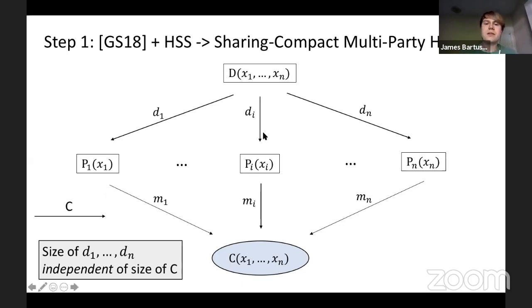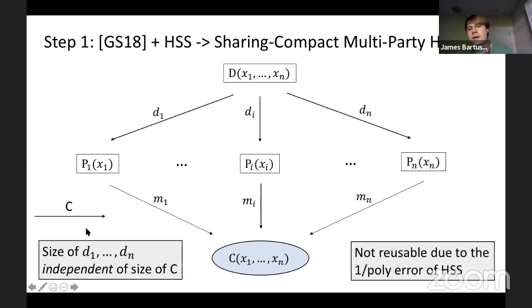The non-trivial property we get is that the size of these DI messages are small. They just consist of PRF keys and HSS shares. In particular, they're independent of the size of the circuit that the parties can compute in the second round. You might think because we're using a PRF to generate an unbounded number of correlations that this first message is reusable and these parties can compute more circuits in the second round. Turns out this is not the case. This primitive only allows the parties to compute a single circuit of some unbounded polynomial size in the second round, but unfortunately it's not already reusable. The reason for that is due to this correctness error of HSS, and you'll have to see the paper for that. What we have achieved is this primitive which we call sharing compact HSS. To achieve our ultimate goal of reusable two-round MPC, there's two issues: we have this trusted dealer and this is not quite reusable yet.